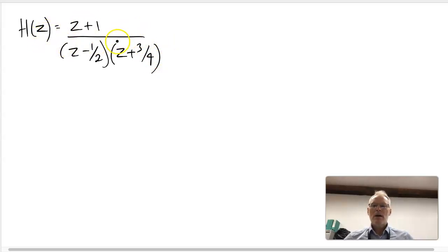We can see from this equation that there are some roots of these polynomials. We could say that we have a pole at a half and we also have a pole at minus three quarters because of these two.